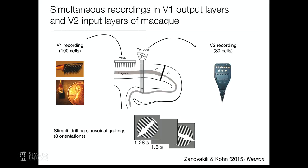The recordings: simultaneous recordings with a Utah array from the output layers of V1, and tetrodes from the input layers of V2 in a macaque. A nice feature of using V1 and V2 is retinotopy — you can verify that the two areas you're recording are actually communicating. In this schematic, blue dots are V1 neurons shown in visual field coordinates with receptive field centers; blue circle shows V1 receptive field size. Red neurons are V2 neurons from tetrode recordings; red circle shows V2 receptive field size.